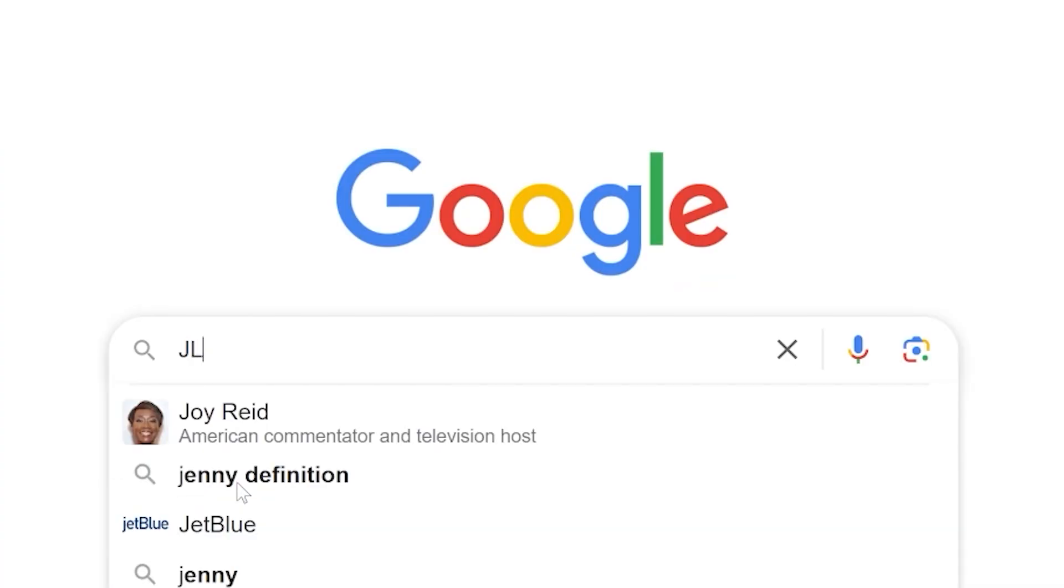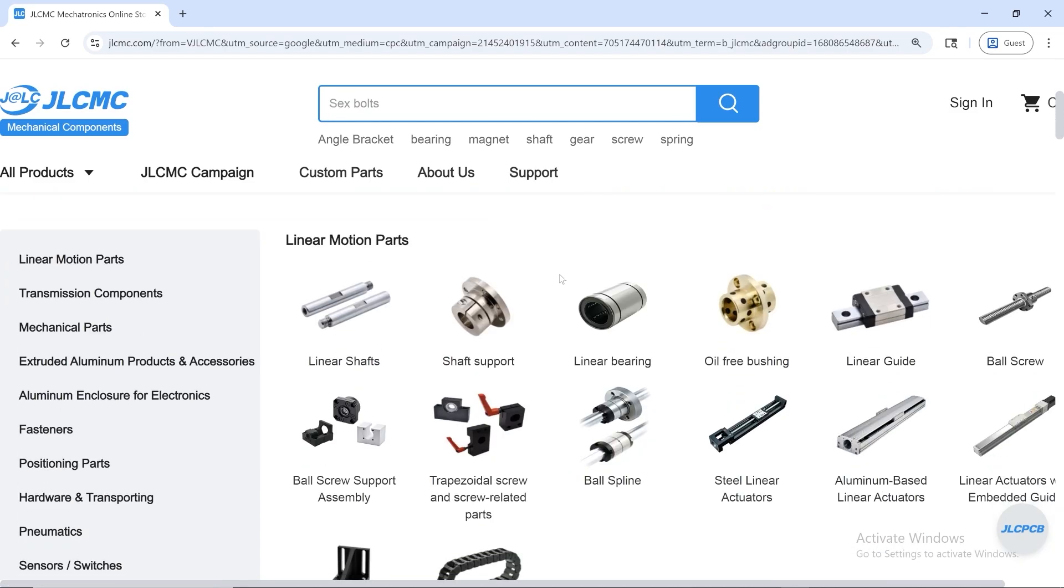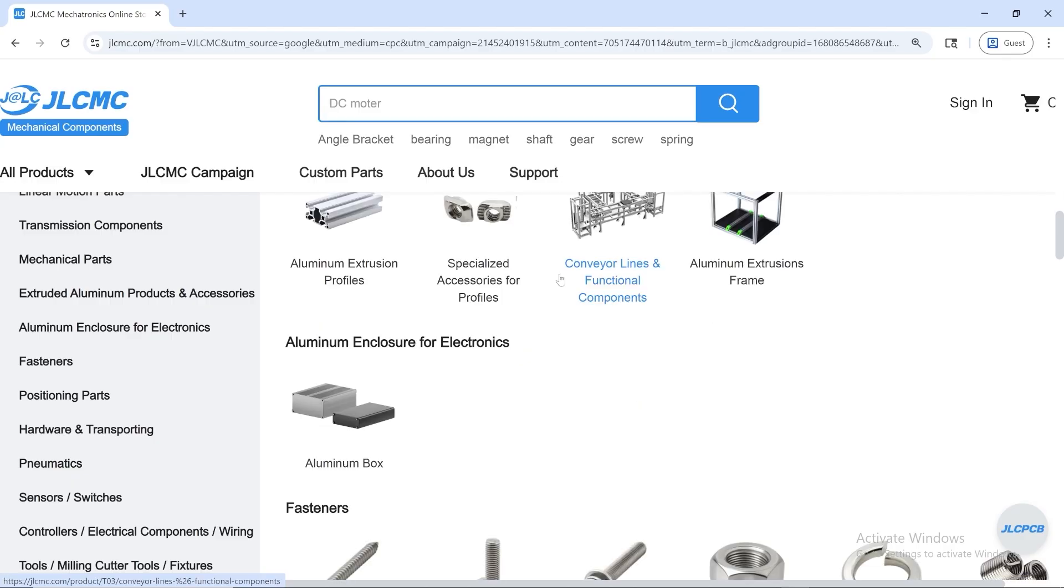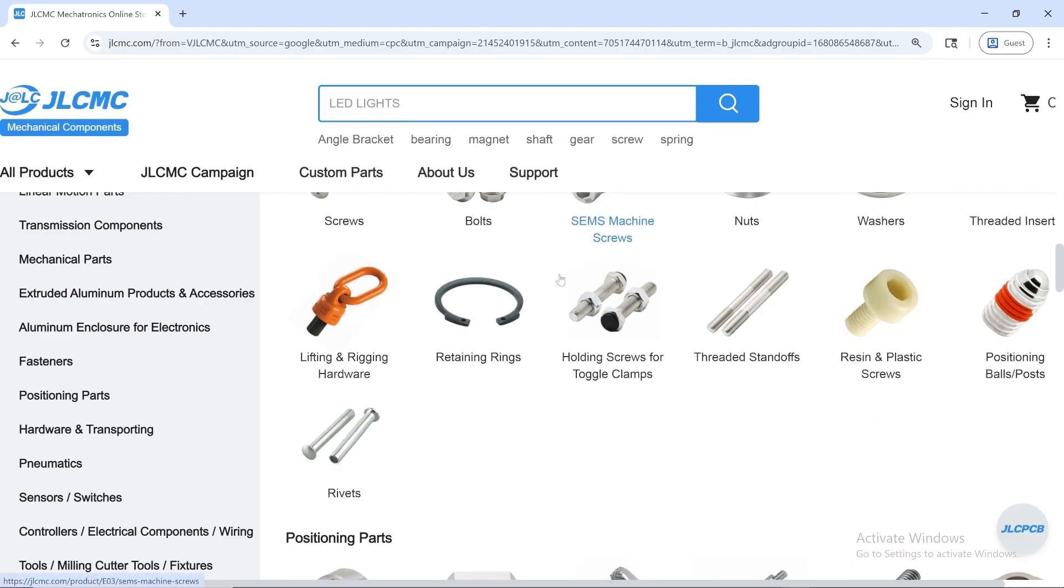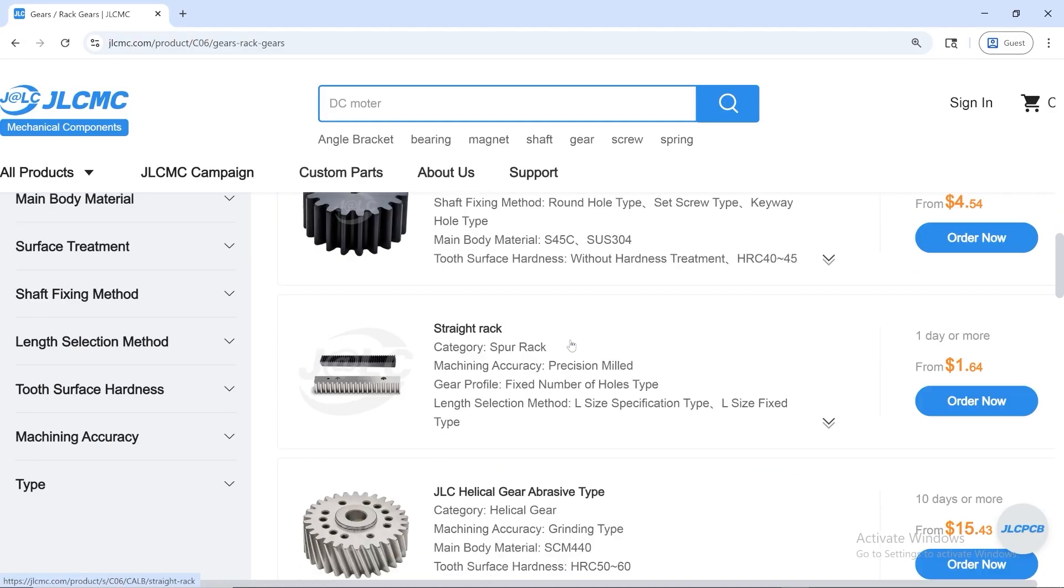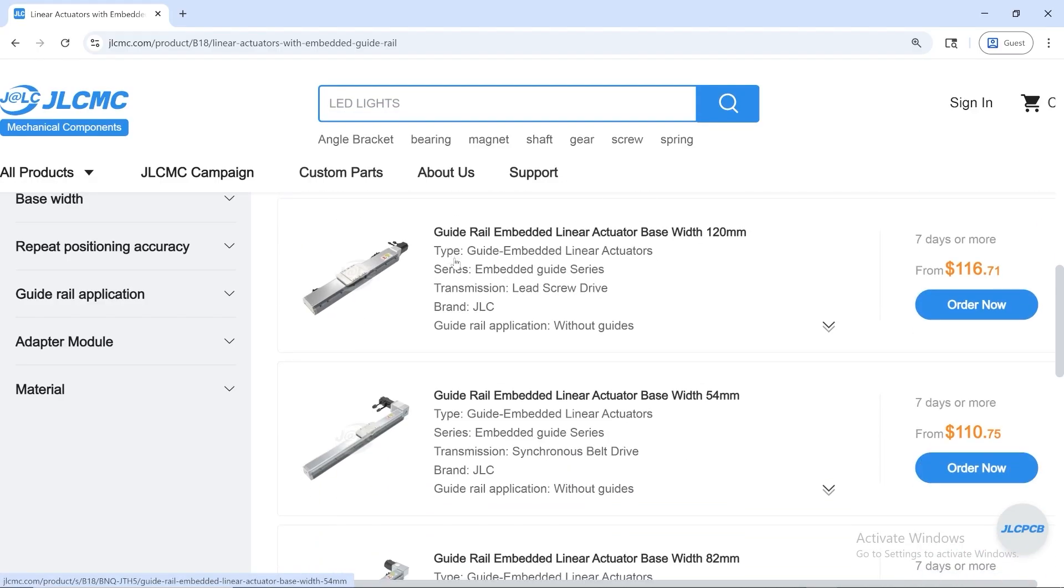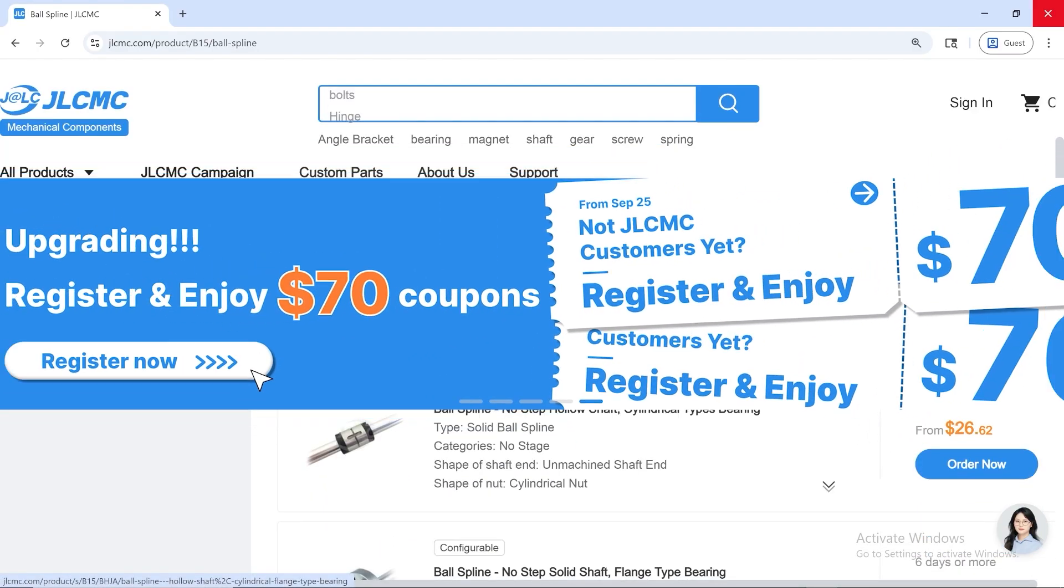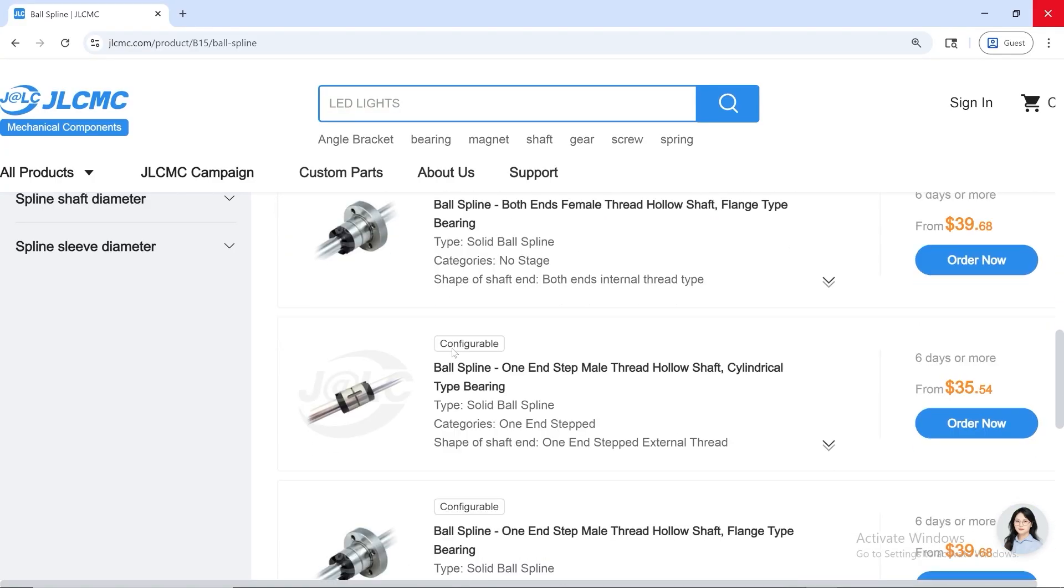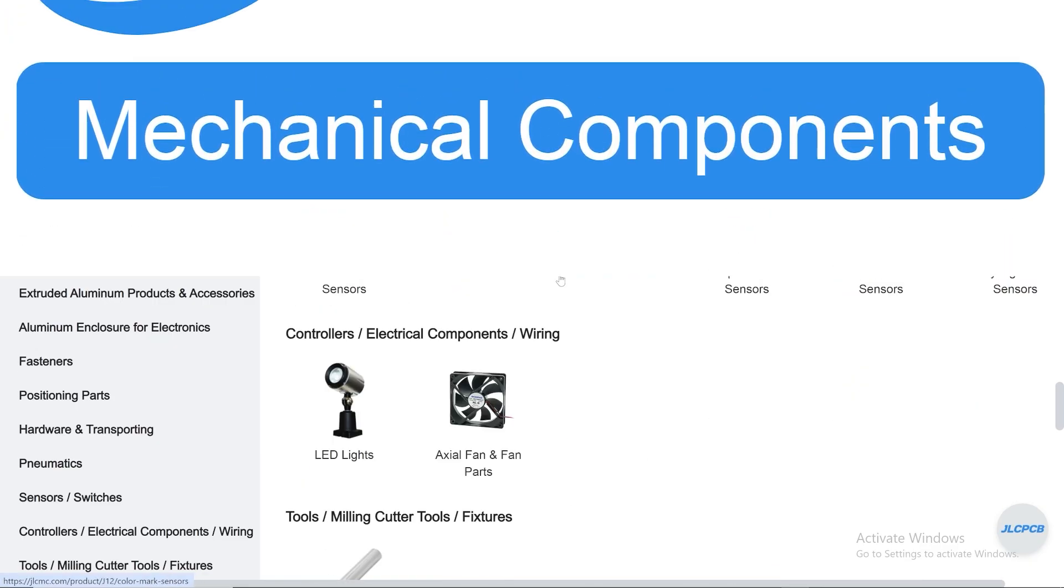Need reliable parts for your next DIY or engineering project? JLCMC makes it easier than ever to get what you need. Fast, affordable, and all in one place. Whether you're building, prototyping, or upgrading, they offer a massive selection and even custom solutions tailored exactly to your specs. No more delays. No more overpriced suppliers. Just smart sourcing and fast worldwide delivery. And here's a bonus. If you're a new user, you'll get a $70 coupon just for signing up. So why wait? Power your next project with confidence and with JLCMC. Visit JLCMC.com today. Links in the description.